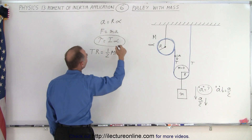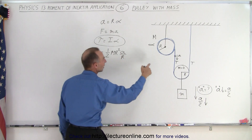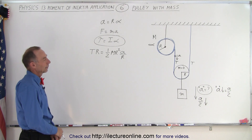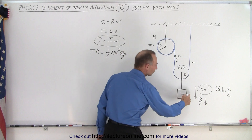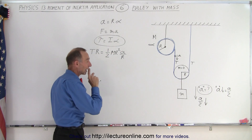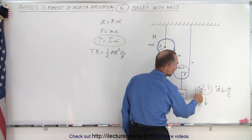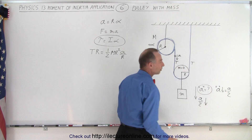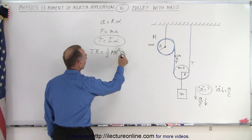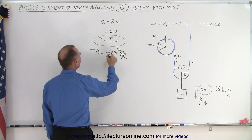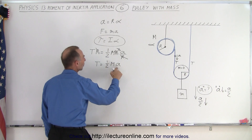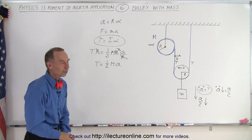Alpha can be written as a over r. This a is the tangential acceleration of the string, which is two times the acceleration of the mass. We can simplify by canceling r with r on both sides. Now we have: tension T equals one half times the mass of the pulley times the tangential acceleration of the string along the pulley.